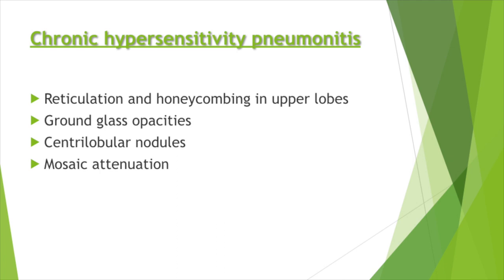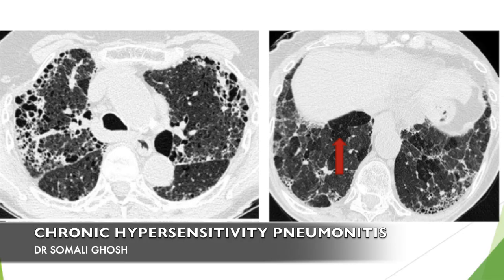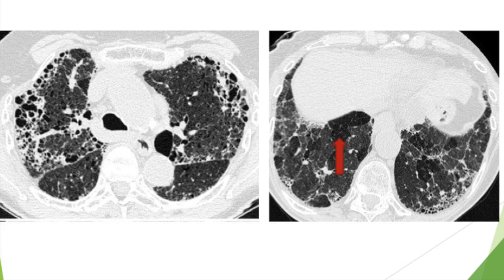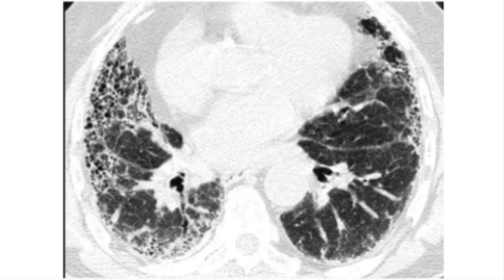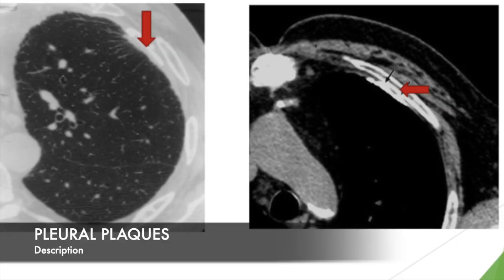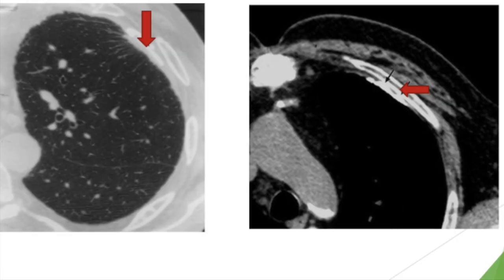In chronic hypersensitivity pneumonitis, we get reticulation and honeycombing just like in IPF, but they are more in the upper lobes. Along with it, we also get ground glass opacities, centrilobular nodules, and mosaic attenuation. In asbestosis, we get subpleural reticulation and honeycombing, but we also look out for subpleural lines, parenchymal bands, pleural thickening, and calcified or uncalcified pleural plaques.